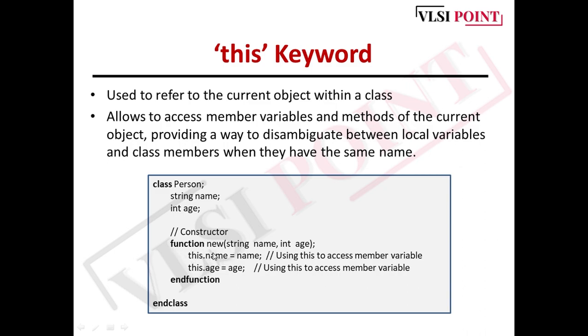You can see here in this example: class Person with properties name (string type) and age (integer type). In the constructor, we've defined function new with arguments string name and int age. Both have the same name - properties and arguments. To make a differentiation between them, we use the 'this' keyword. This.name represents the property name, and this name is the argument name. This.age represents the property age, and this age is the argument age. To make proper differentiation between these two, we use the 'this' keyword.